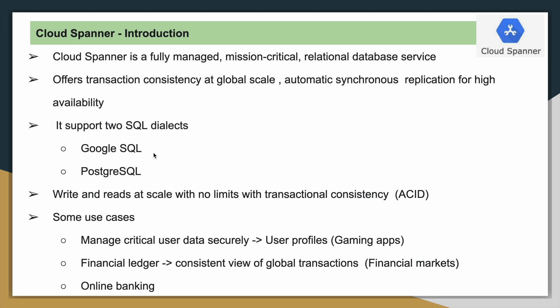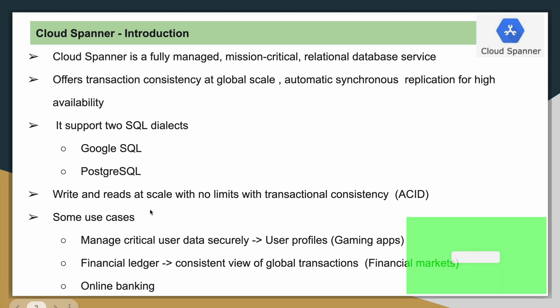Google SQL is almost similar to BigQuery SQL, and PostgreSQL is an open source relational database service. Based on the skill set available within the team, you can go for one of these dialects. Since Cloud Spanner is horizontally scalable, we can write and read data at scale with no limits and also with transactional consistency.